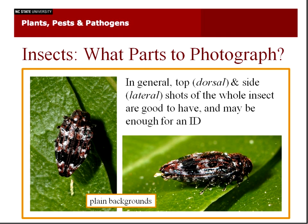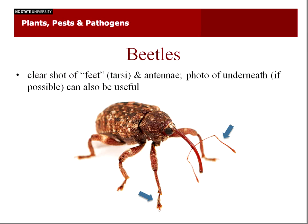What parts of the insects do you photograph? In general, when you're photographing an insect, you want to get a top shot or dorsal shot, and then a lateral or side shot. Whole insects are good to have. You also want to generally make a plain background — either some leaves, paper, or whatever. If there's too much going on in the background, it can distort legs or little body parts that might be useful for ID.